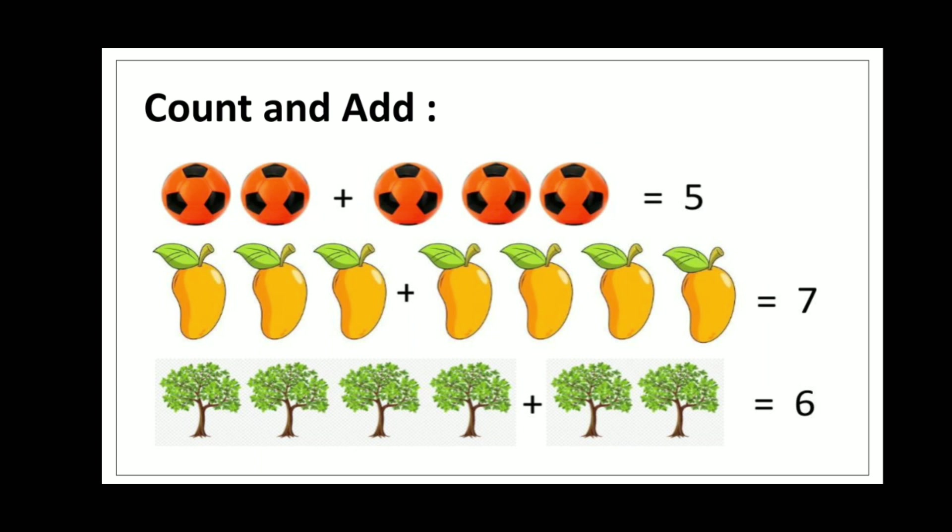Let's count and add the objects. My dear students, can you see the plus sign? This is the symbol of the addition sign. Let's see the example. There are two footballs on one side and three footballs on another side. Let's add: two plus three is equal to five. Same with another given example: three mangoes plus four mangoes is equal to seven mangoes. And four trees plus two trees is equal to six trees.